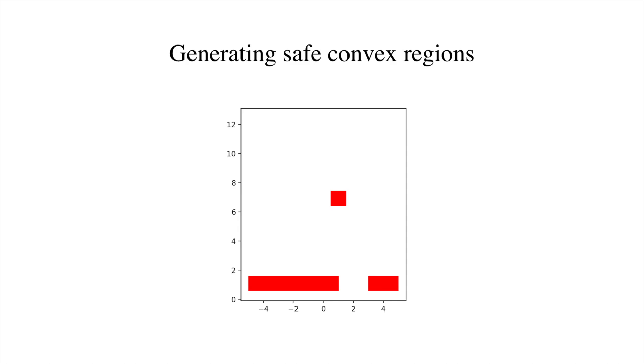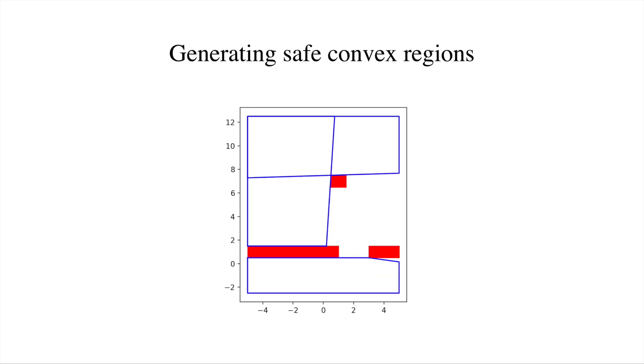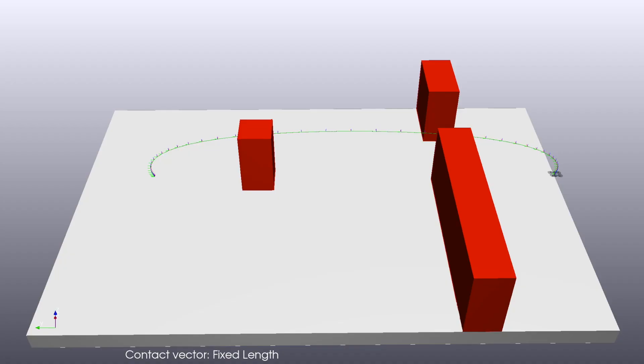For the first flight test, a simple obstacle environment is constructed. Here it can be seen how the safe convex regions are generated from the obstacle environment. Here the resulting collision-free trajectory is plotted, together with the quadrotor following the trajectory using the time-varying LQR controller.